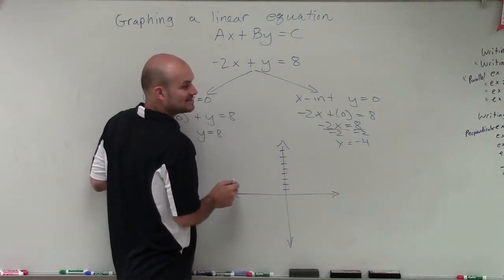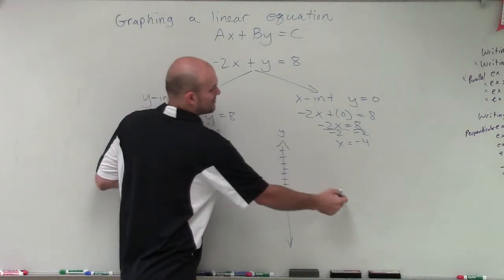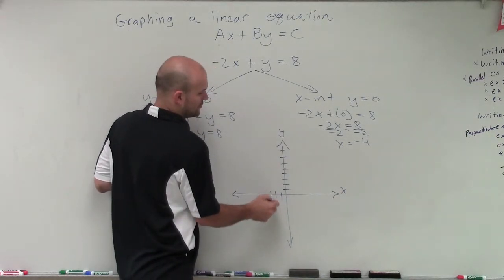And then my x-intercept is negative 4, so I'm going to go to the left: 1, 2, 3, 4.